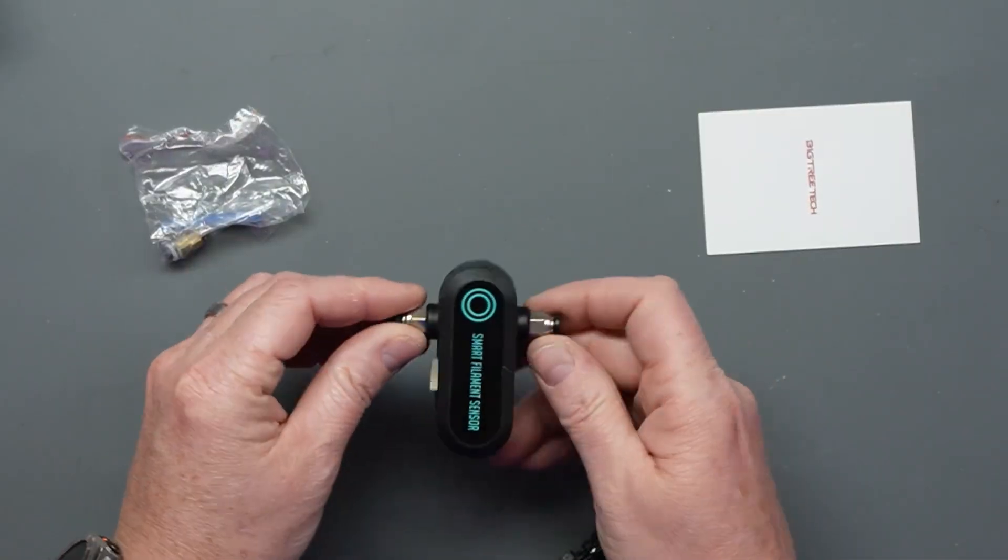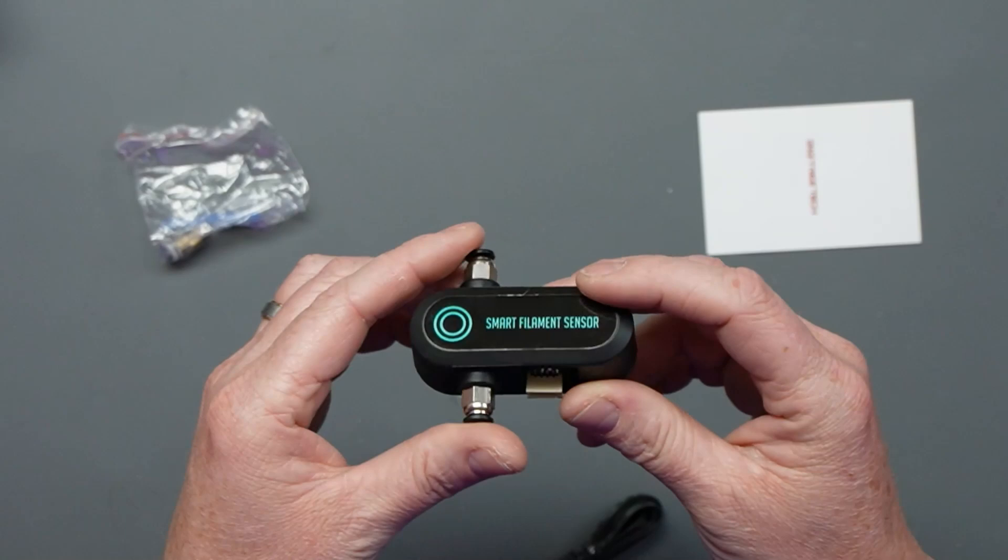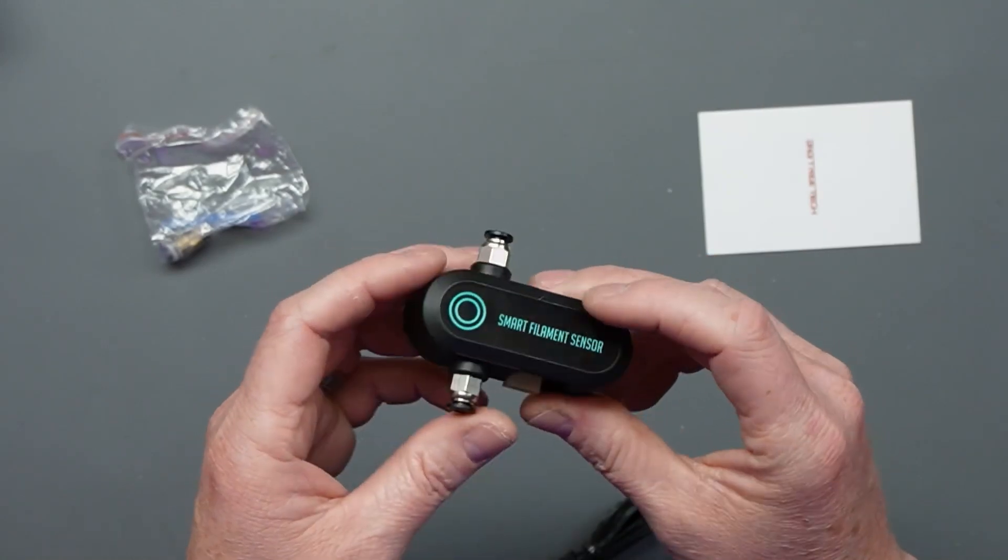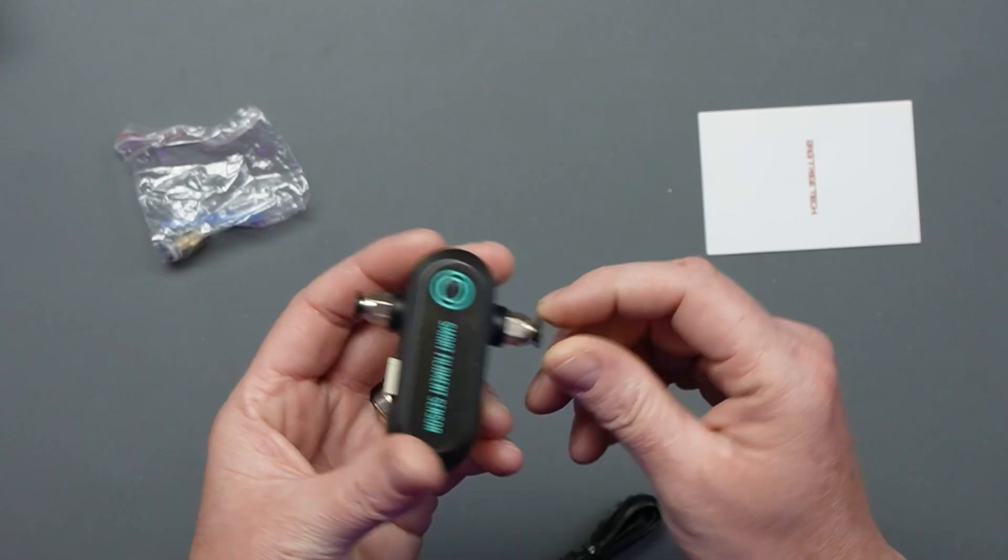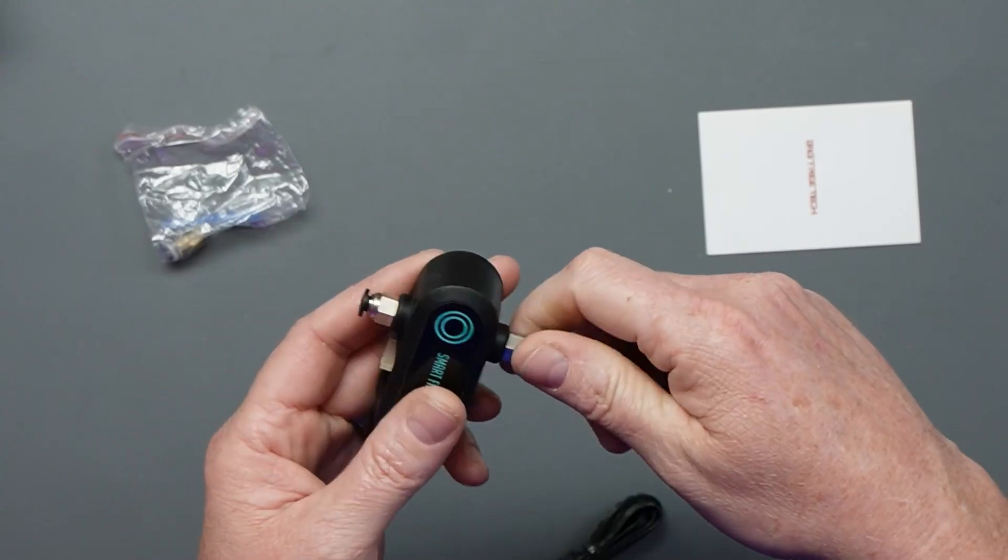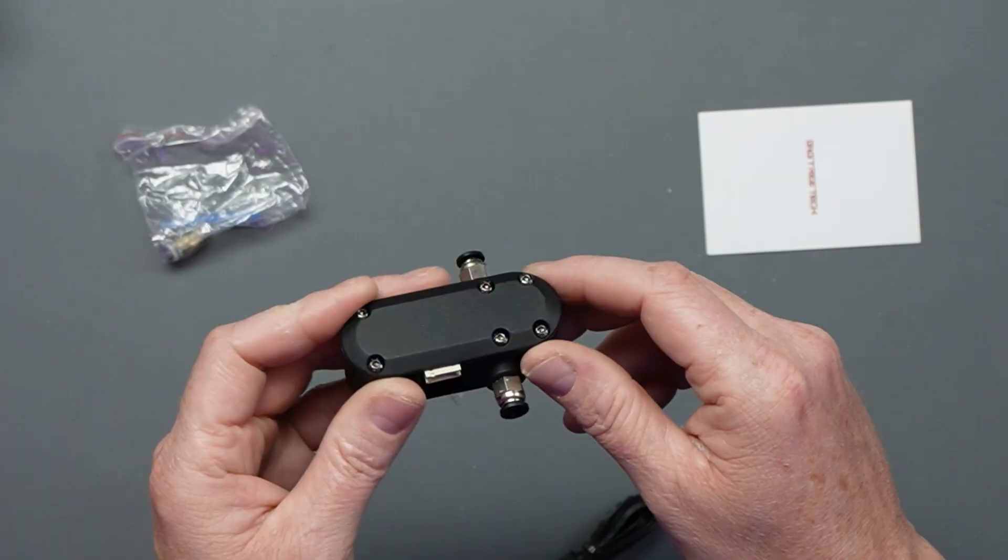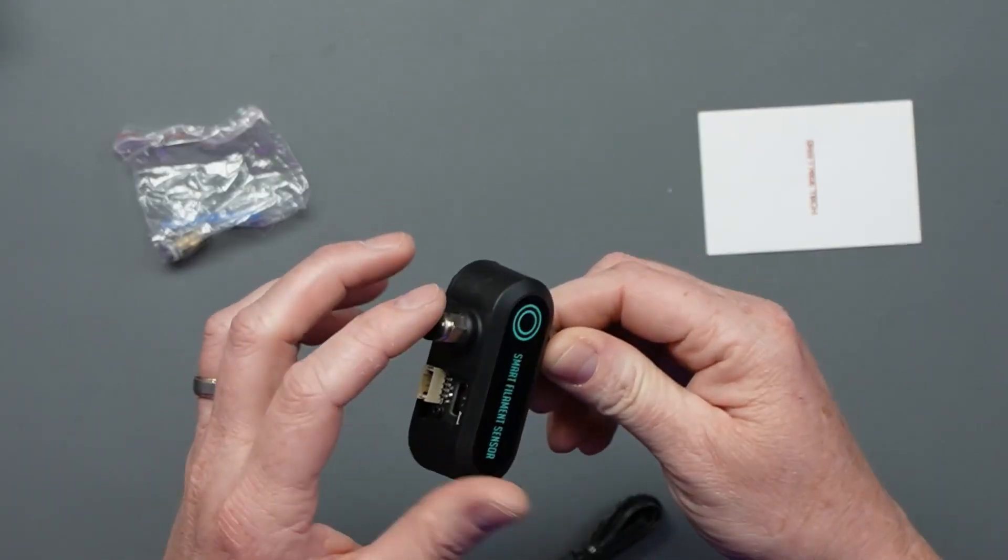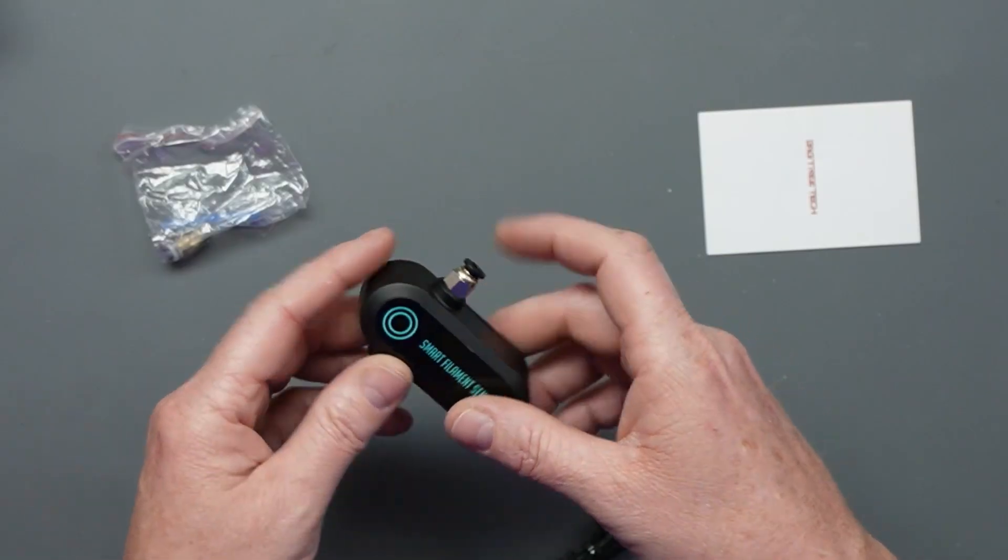The thing with this one was there were some issues with it, and they kind of listened and made the revision two. For one thing, it's kind of difficult to feed filament through here. When you push it through, you've got to push really hard to get it through inside here. We'll open this up and show you what it looks like inside, but that's the main thing with this—it makes it difficult to feed filament.